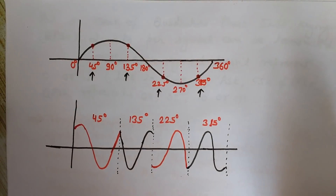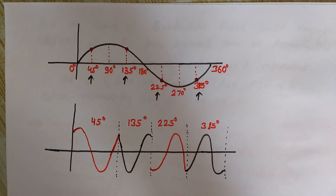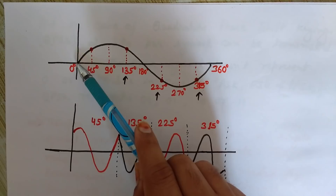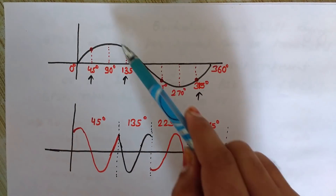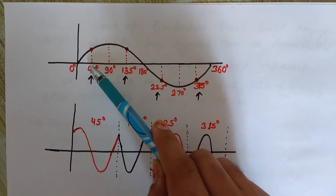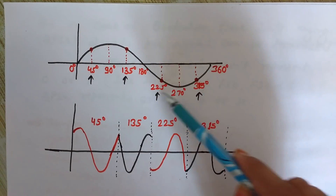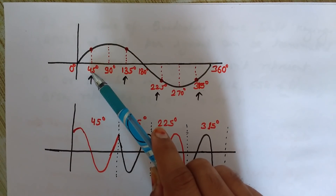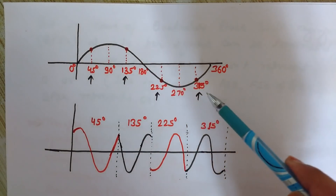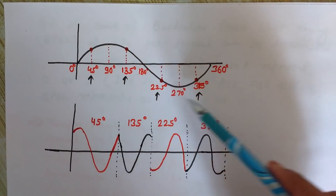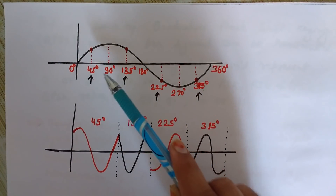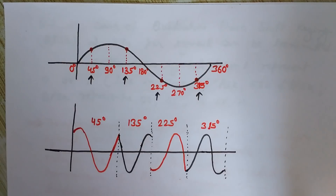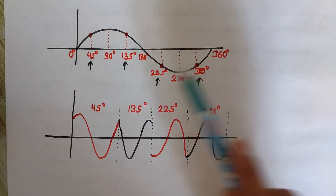Now look at this sinusoidal wave — this is just to explain the concept. You can see here that this is 0 degrees, here it is 180 degrees, and here 360 degrees. These are the points at 45 degrees, 90 degrees, 135 degrees, and 180 degrees. I have told you that we are using 45 degrees, 135 degrees, 225, and 315. So we need all four phases to distinguish different phases so there is no mixing.